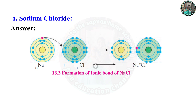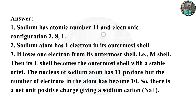Sodium chloride, NaCl. Sodium has atomic number 11 and electron configuration 2, 8, 1. The sodium atom has one electron in its outermost shell. It loses one electron from its outermost M shell. Its L shell then becomes the outermost shell with a stable octet. The nucleus of the sodium atom has 11 protons, but the number of electrons has become 10, so there is a net unit positive charge giving a sodium cation Na⁺.